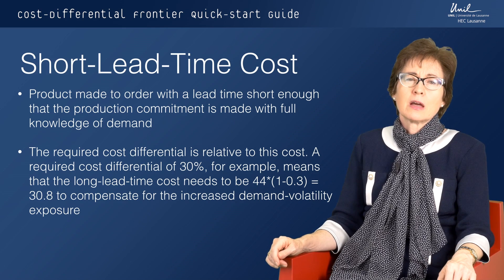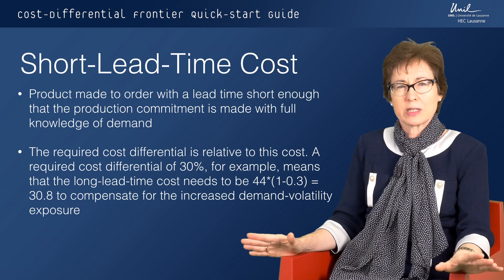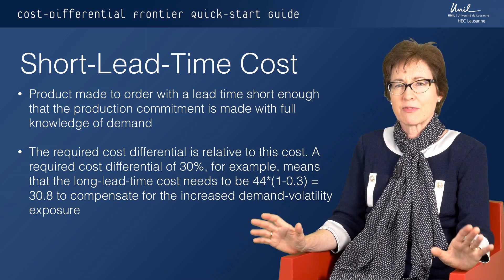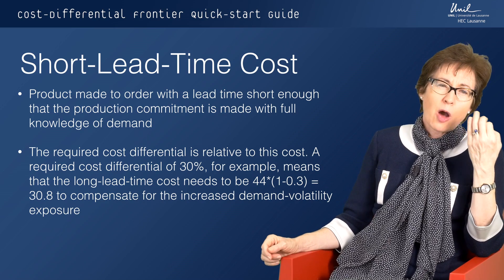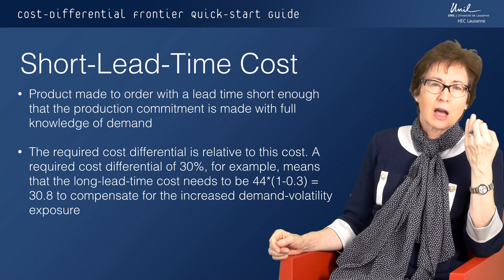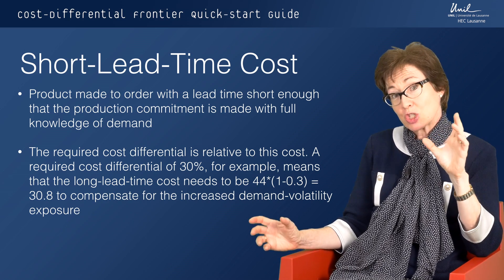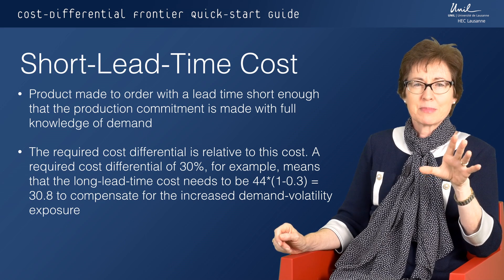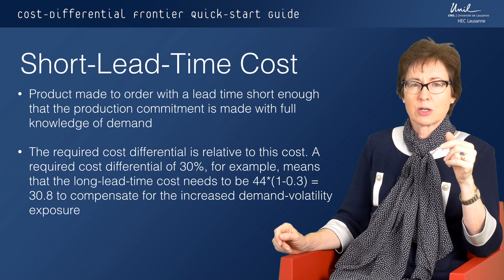The retail price is pretty straightforward, so now let's go to the short lead time cost. With the short lead time cost, we're thinking about a product that is made to order, and we have full knowledge about what demand is — the lead time is short enough that we don't have to decide what to produce until we have that full knowledge. The calculator will tell us what is the required cost differential to make us indifferent between paying this short lead time cost or having a cheaper cost that goes with an extended supply chain. For example, if we have a cost differential of 30%, that means we would be working with a long lead time cost of 30.8 relative to our short lead time cost of 44.